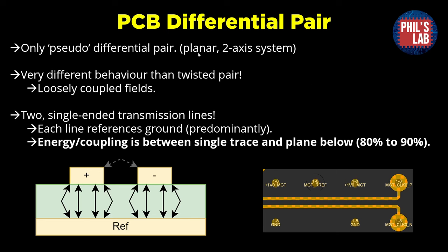In comparison, PCB differential pairs are a planar two-axis system — a lesser system than the twisted wire pair, so we'll call them pseudo-differential pairs. We have loosely coupled fields between the two traces. In a PCB cross-section, 80% to 90% of the fields couple between the individual traces and the reference plane below, not between each other. So each line couples to the reference plane, making these effectively two single-ended transmission lines that require a proper reference, whereas the twisted wire pair did not.